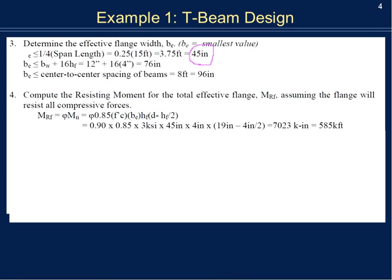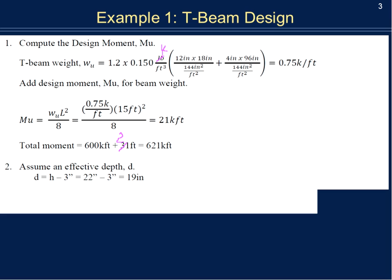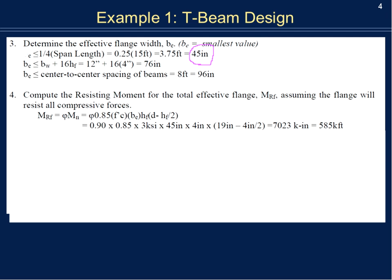Let's compute how much strength is in the flange. Assuming bending, the phi factor is 0.9, times 0.85, times f'c of 3 KSI, times the effective width of 45 inches, times the flange thickness of 4 inches, times (d − h_f/2) with d ≈ 19 inches. That gives 7,023 kip-inches or 585 kip-feet. Since the total moment is 621 kip-feet, the flange can't handle the entire load, so we need additional capacity in the web — it's a true T-beam.